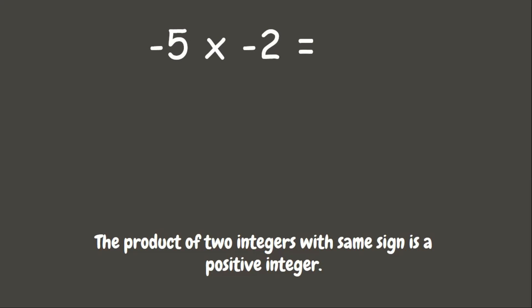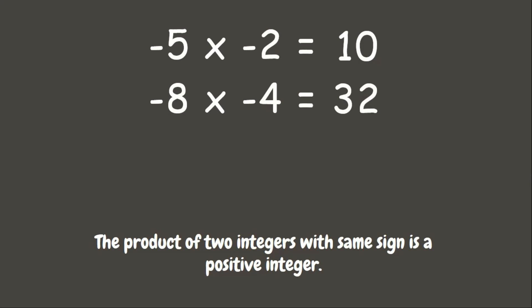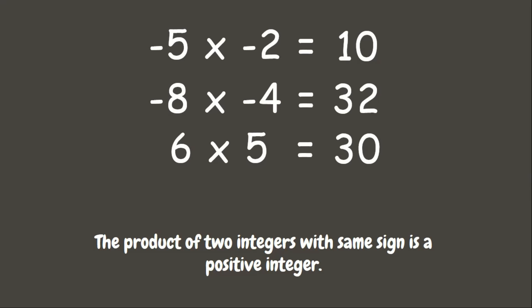5 times 2 is 10, and since they are both negatives, the answer is positive 10. Next, we have negative 8 times negative 4. 8 times 4 is 32, and since they have the same sign, the answer is positive 32. Next, we have positive 6 times positive 5. The answer is 30, and since they have the same sign, the answer is positive. Next, we have positive 1 times positive 9. If we multiply them, we get positive 9.